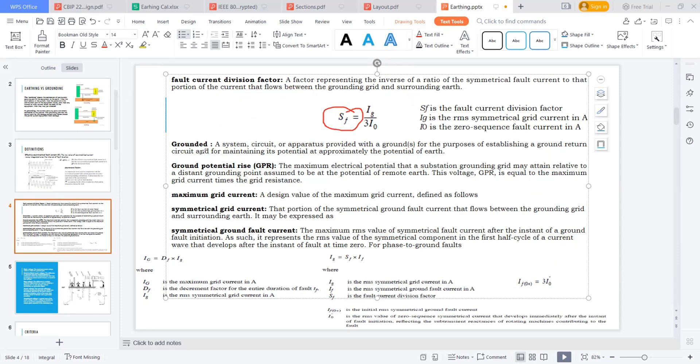The next one is grounding, which we already discussed. The next topic is Ground Potential Rise, GPR. Ground potential rise is the maximum electrical potential that a substation grounding grid may attain relative to a distant grounding point assumed to be at remote earth potential.